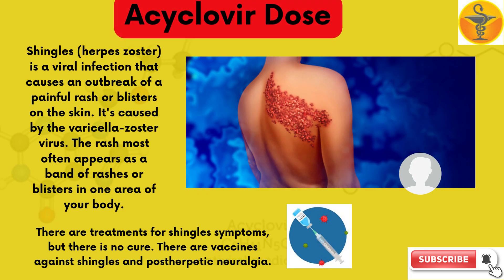Shingles is a viral infection that causes an outbreak of a painful rash or blisters on the skin. It is caused by the varicella-zoster virus. The rash most often appears as a band of rashes or blisters in one area of your body. There are treatments for shingles symptoms but there is no cure. There are vaccines against the shingles virus.